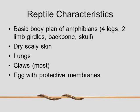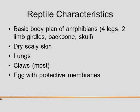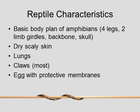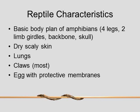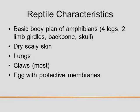However, they do have some differences. One of the main differences is they have dry, scaly skin. We talked about how the amphibians have moist skin with lots of mucus glands to keep them moist — reptiles do not have that. Also, all reptiles have lungs; at no point in their life cycle do they have gills. Most reptiles have claws, which is something amphibians lack. And very importantly, reptiles have an egg with protective membranes.